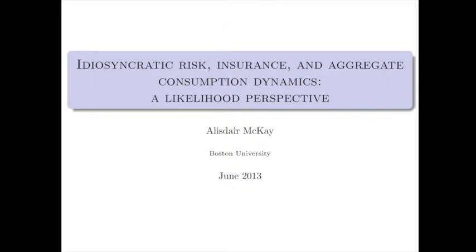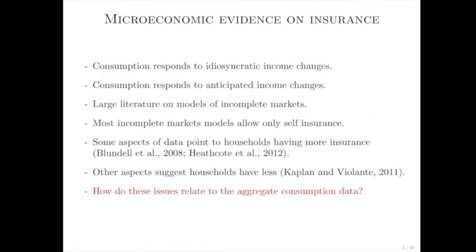Households have various forms of insurance against idiosyncratic shocks. We see that consumption responds to idiosyncratic income changes and to anticipated income changes. These kinds of data have led to the development of a large set of incomplete market models, and many of these models focus on self-insurance — households just have access to some savings. But some aspects of the microdata suggest that households have more insurance than that, and some suggest less. The question I'm interested in is what do all of these issues mean for the dynamics of aggregate consumption data?